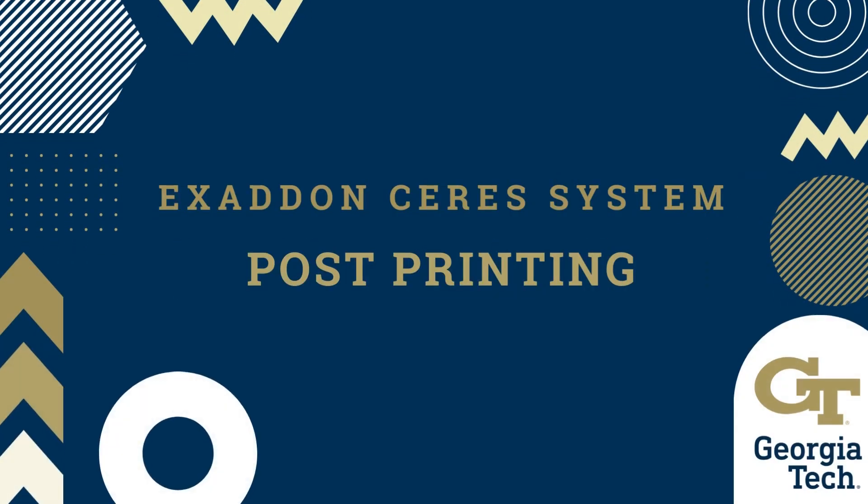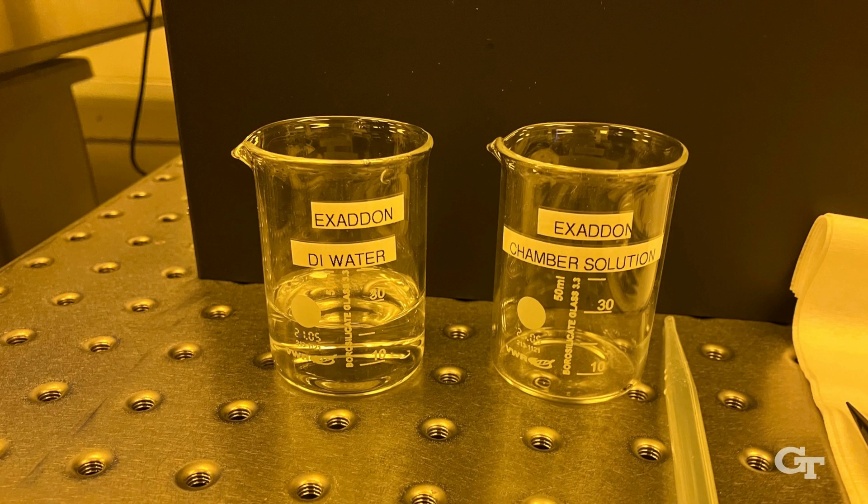This is the post-printing process for the Exaddon Metal Printer. Prepare the two Exaddon beakers by filling the DI water beaker.